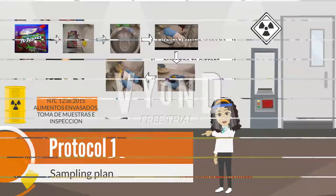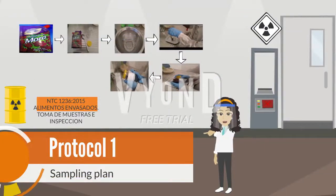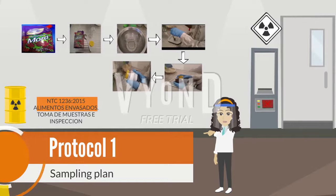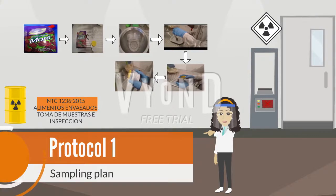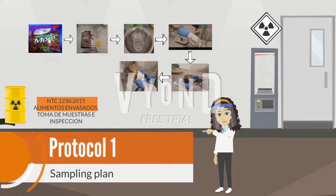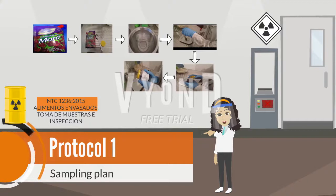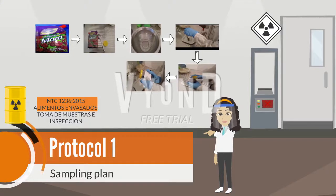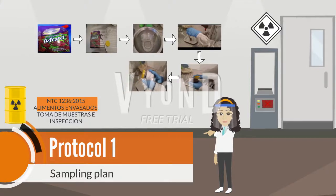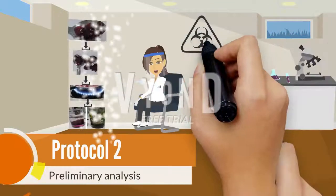Sampling plan: this protocol is important because the method of collecting and preserving the sample requires the photographic sequence of the sampling plan for the implementation of this protocol, shown in NTC 1237.